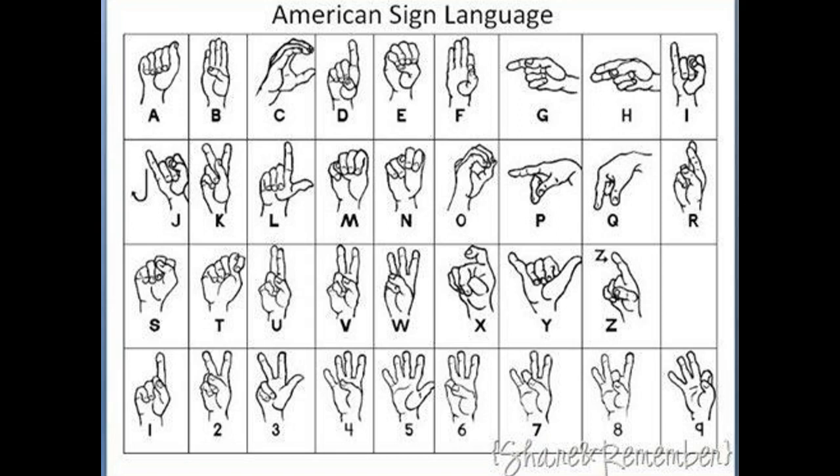Notice a couple things about some of the letters. For instance, the C looks just like a C — you form a C with your hand. There are other letters like that, whether it's the L, the U, the V, or the W — they kind of look like their letters. And then there are others that look nothing like their letters, and some that require a motion to indicate. The J, you have to swoop your pinky, and the Z, you have to make the Z symbol.